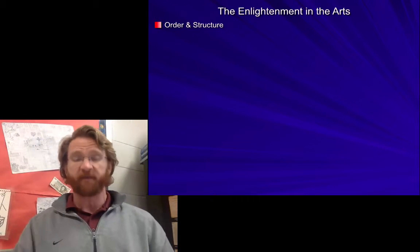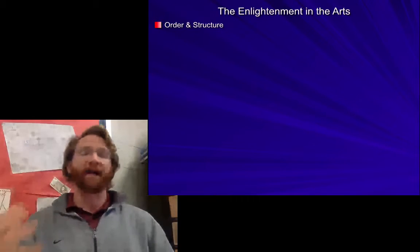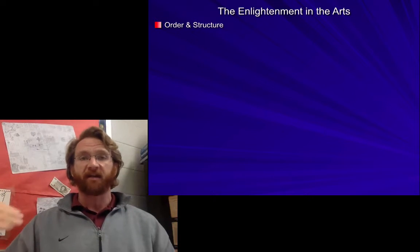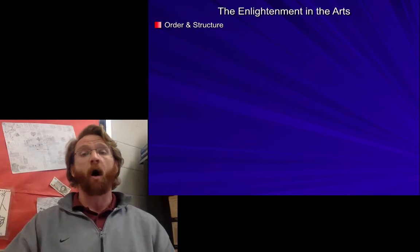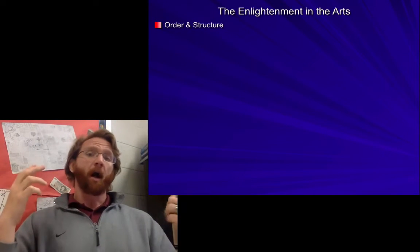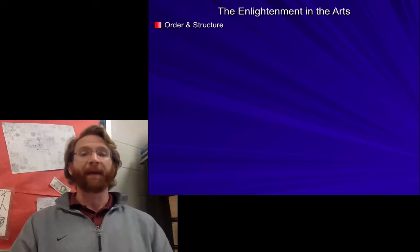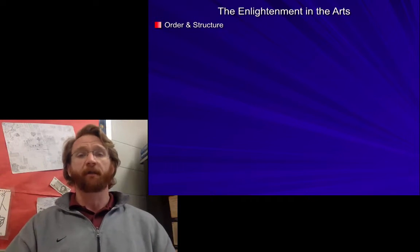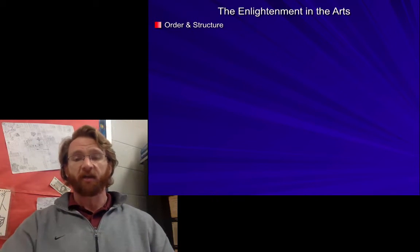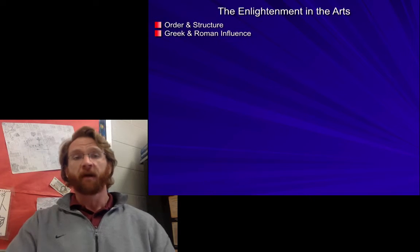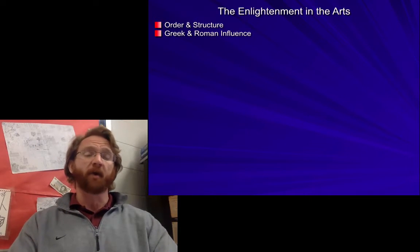Enlightenment in the arts is all about order and structure. Remember, this is the age of reason, the age of logic, so art, literature, actual painting, and music are all very logical in their order, their approach, and their structure. They also show a very heavy Greek and Roman influence.